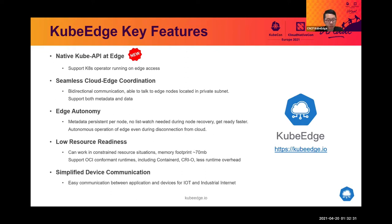KubeEdge is good at providing seamless cloud and edge coordination by providing a bi-directional communication tunnel to manage nodes even when they are located in a private subnet, or even when the network between cloud and edge is very limited — for example, very high latency or very high packet loss.